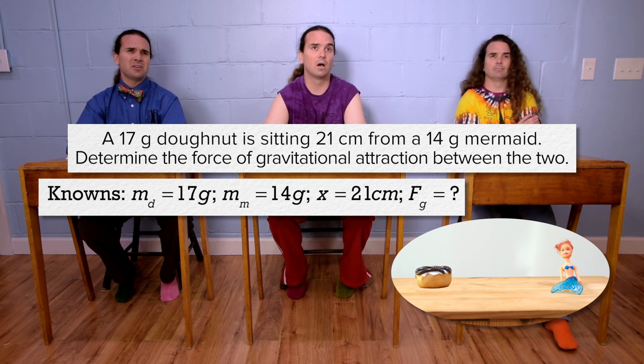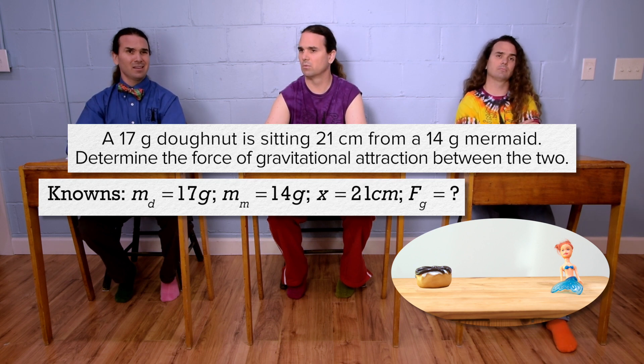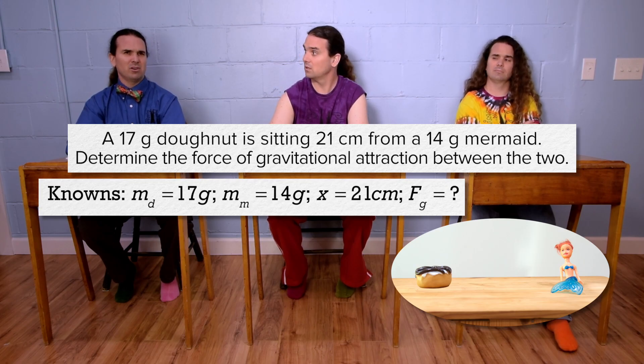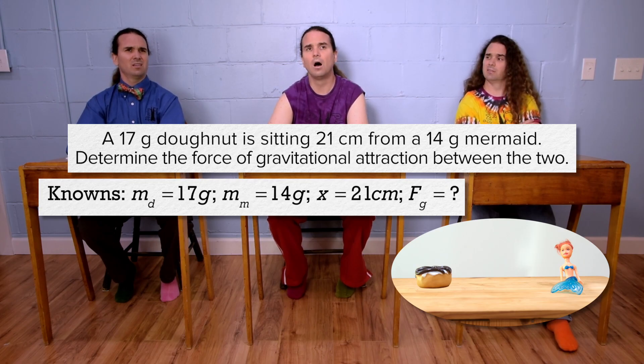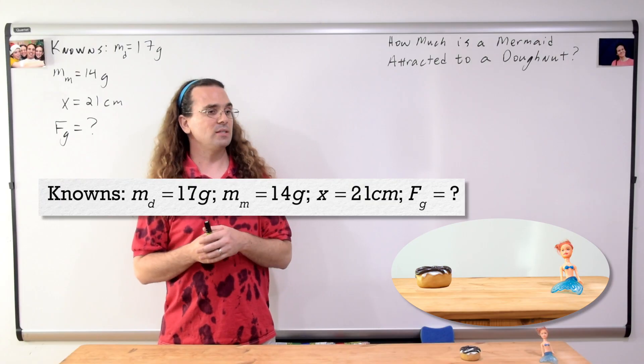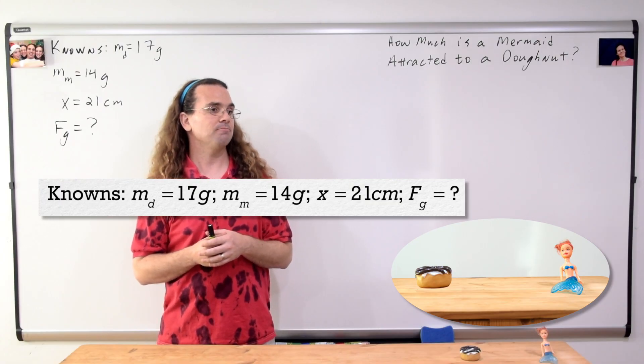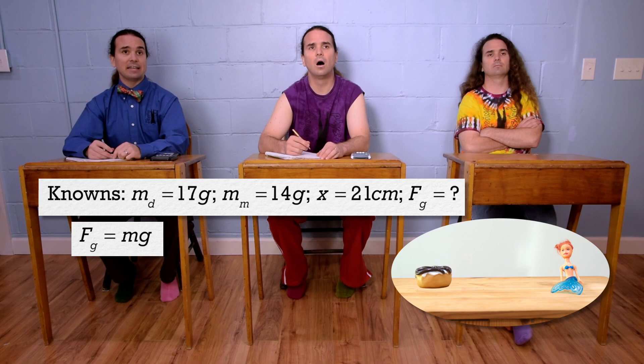How does a donut have more mass than a mermaid? Mermaids are not real. They're not? Neither is the donut. Billy, what is the equation for force of gravity? Force of gravity equals mass times acceleration due to gravity.